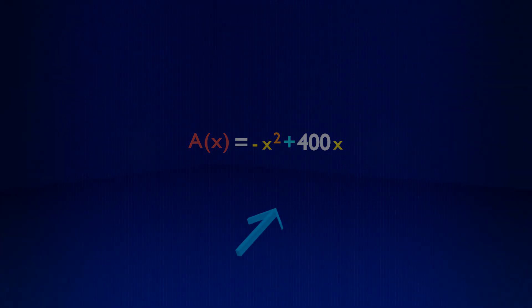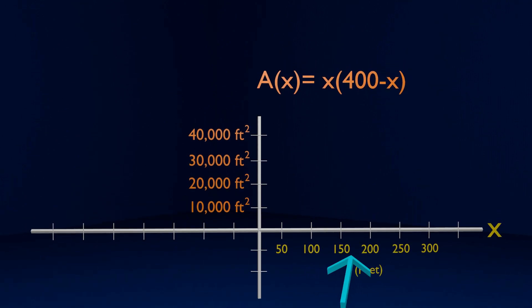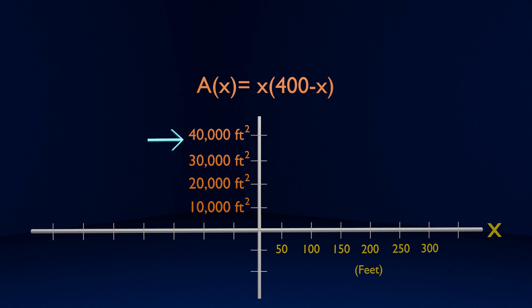You can think of a function as a machine. The x value is the input. Place that input into the machine, our function, and it produces the area of the field.